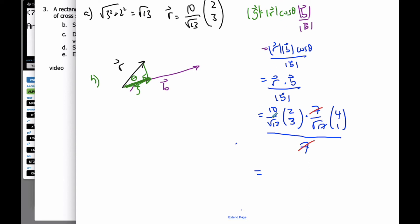And I'm going to then, one of the tricks I can do is I can pull these factors out. So it's going to be 10 over the square root of 13 times the square root of 17. And then I'm going to go (2, 3) dot (4, 1).